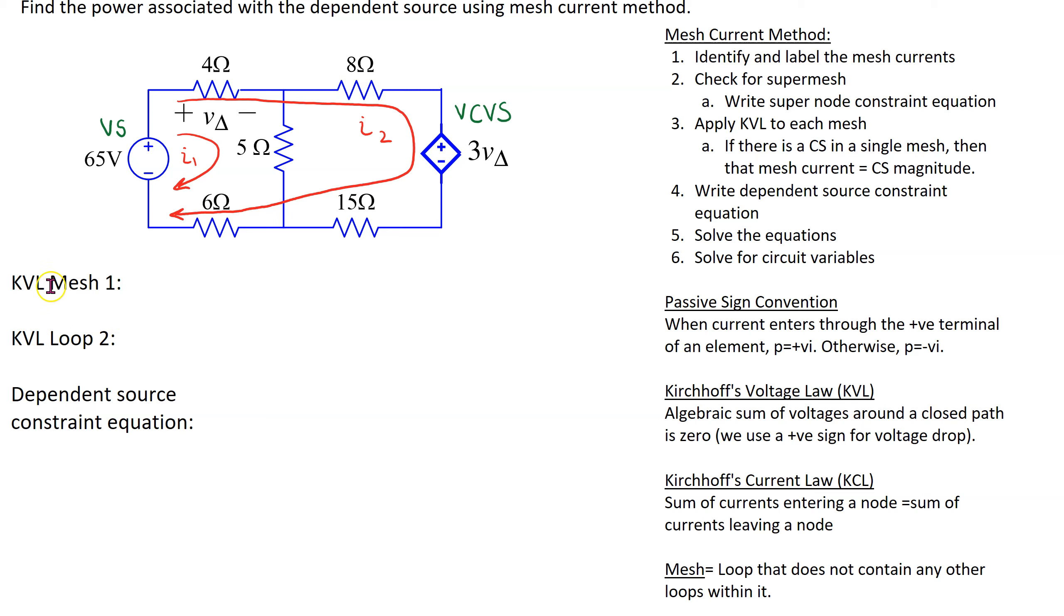The first step is to apply Kirchhoff voltage law to mesh 1. In mesh 1 we have four circuit elements. We can start at any place. Suppose we start at the independent voltage source. Mesh current I1 going from minus to plus. So we follow the direction of mesh 1 and going from minus to plus is a voltage rise. Thus the first term is minus 65 as per passive sign convention.